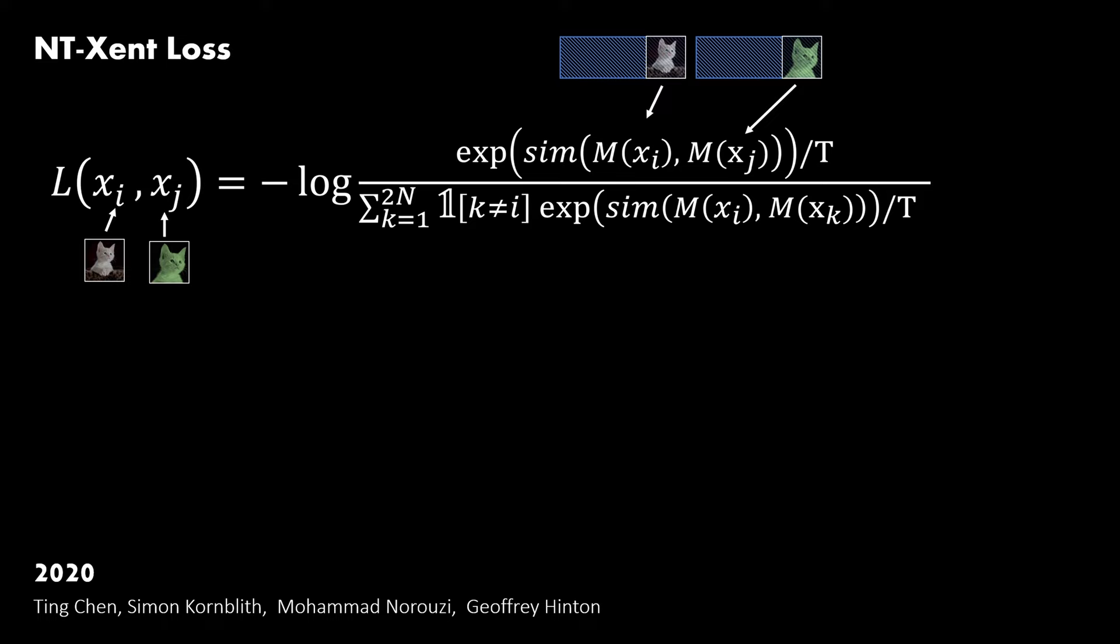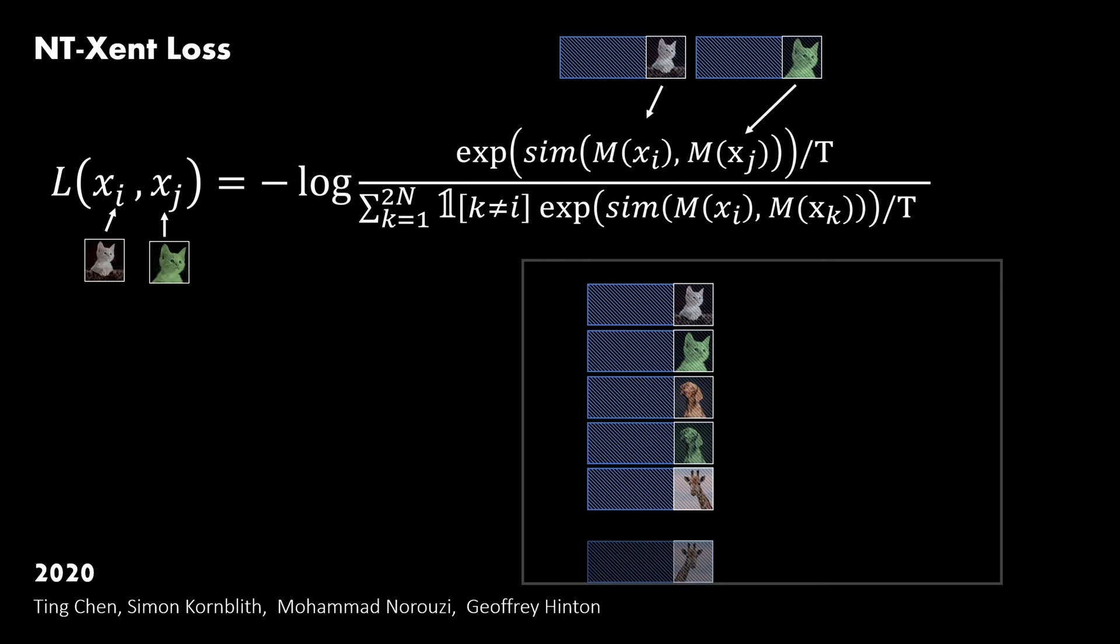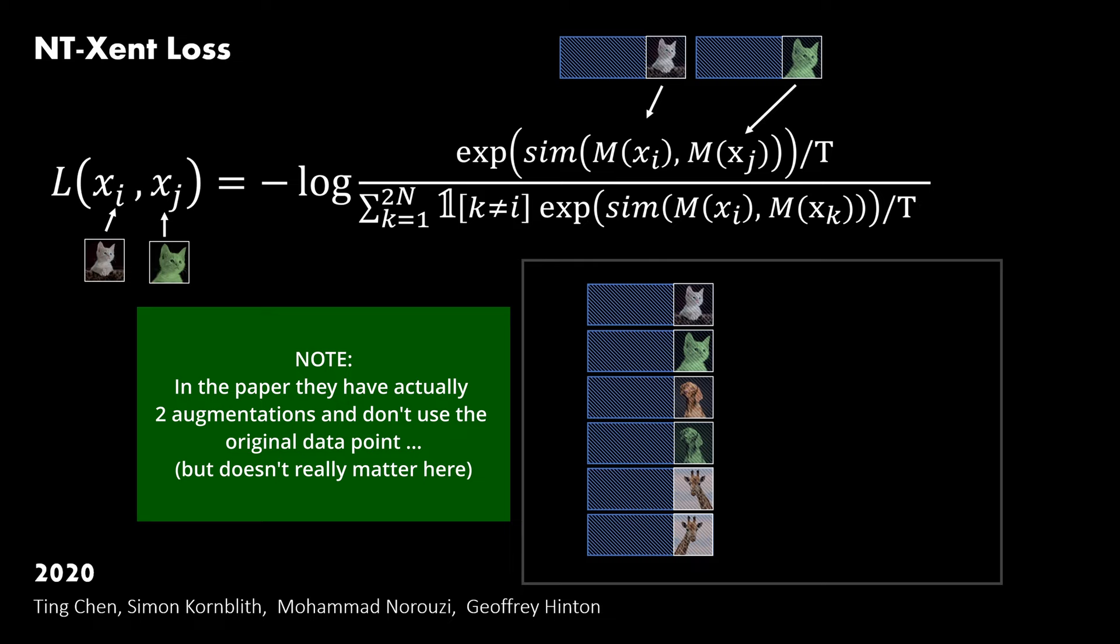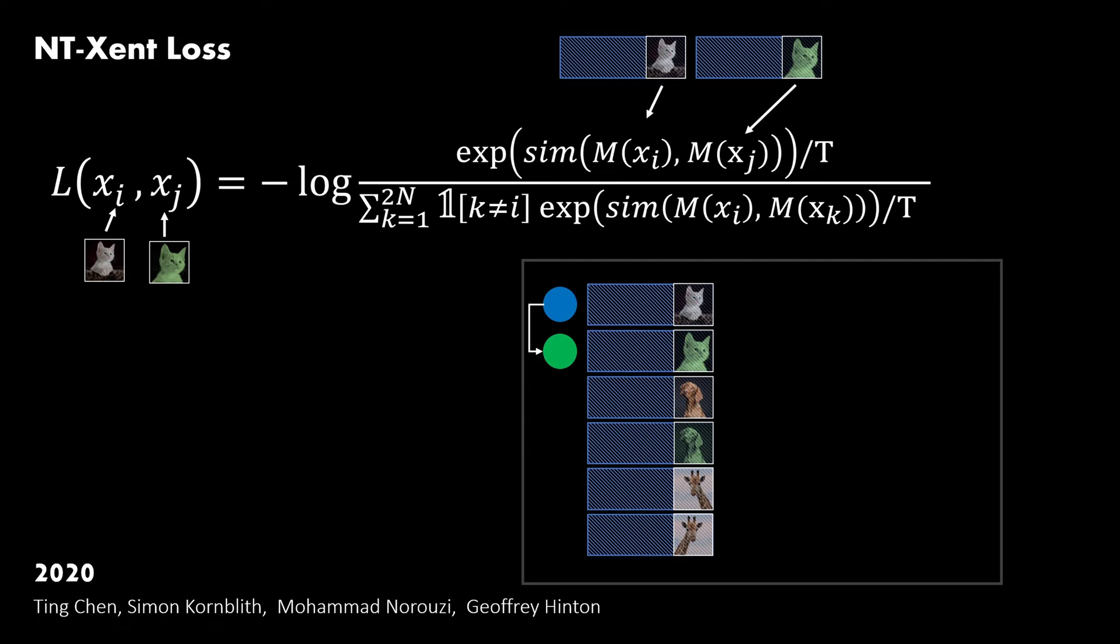Imagine we feed a batch of data through our model and obtain the embeddings like shown here. In total, we have N data points in the batch, and for each of them also a positive augmentation. That makes 2N samples in total. In this example, every odd index is the original data point, and every even index a positive view. What the formula above means is that we calculate the similarity between a positive pair, for example the cat image and its augmentation, and in addition to that we also look at the similarity to all other data points in the batch. This implicitly makes all other data points negative samples.